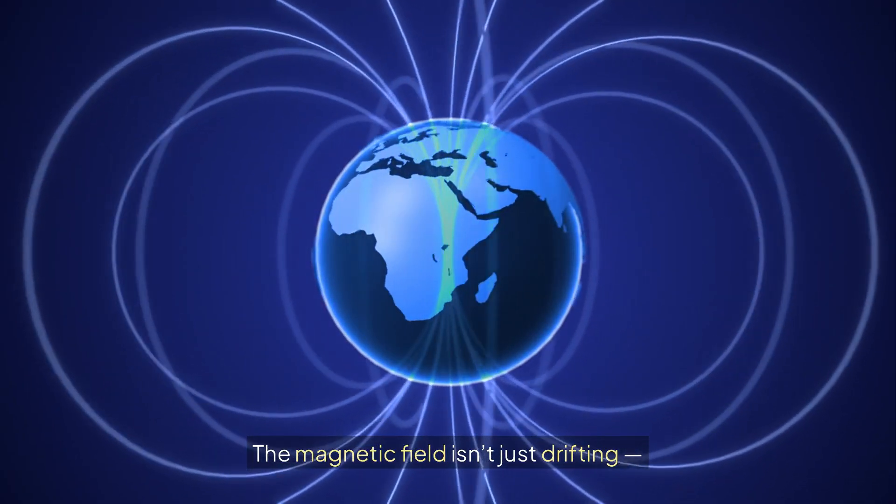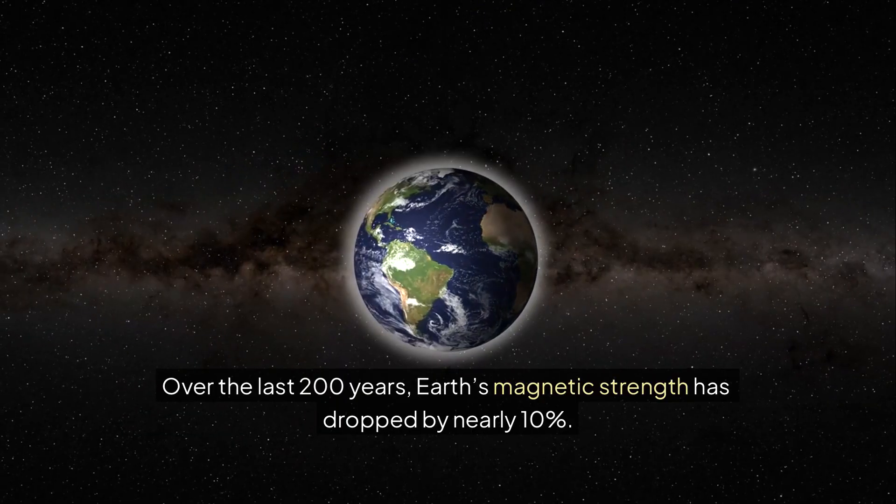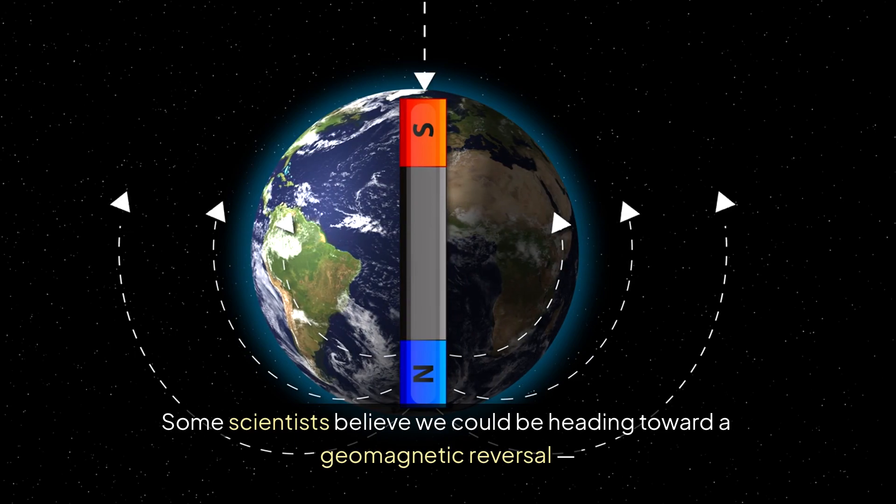The magnetic field isn't just drifting, it's also weakening. Over the last 200 years, Earth's magnetic strength has dropped by nearly 10%. Some scientists believe we could be heading toward a geomagnetic reversal,